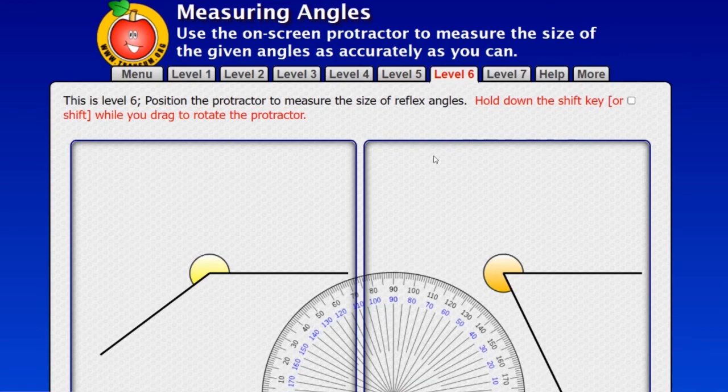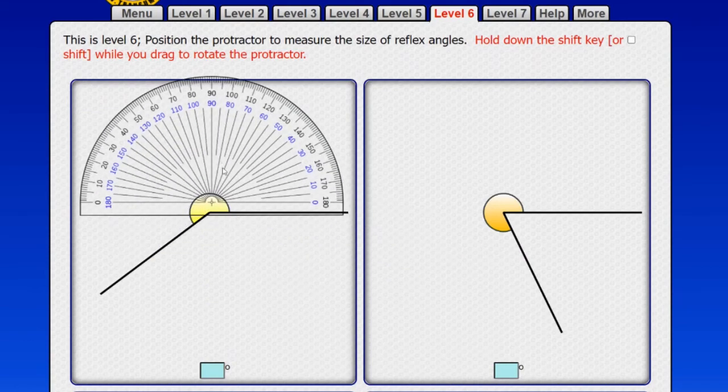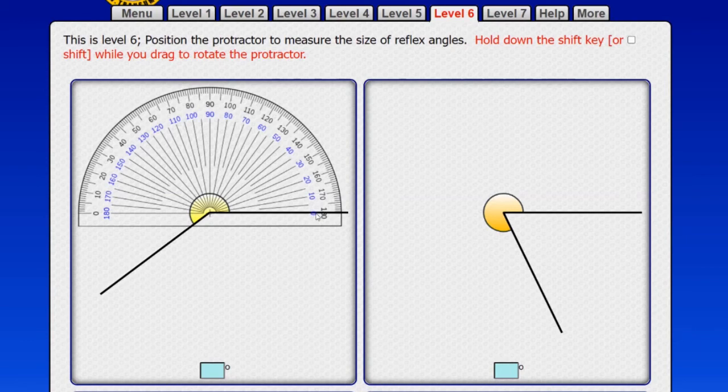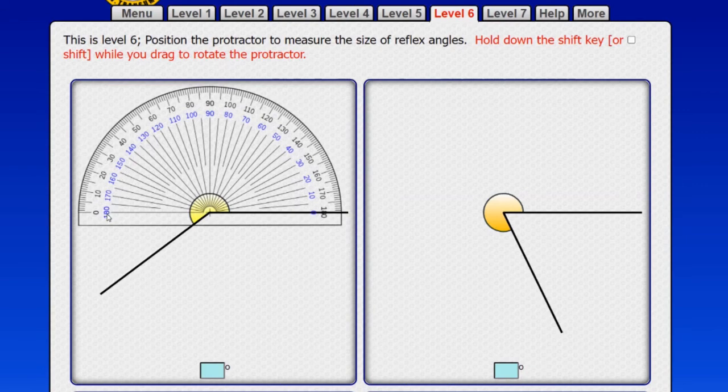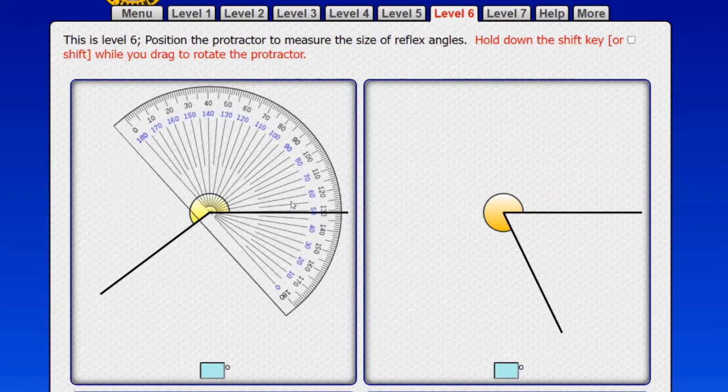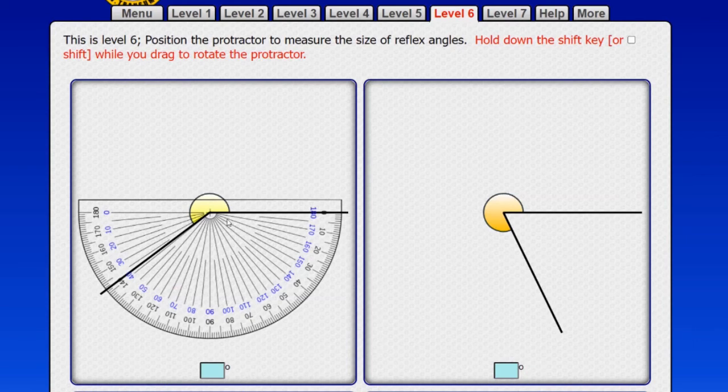Okay, now let's move on to level six. Now here we have some reflex angles. These are angles that are bigger than 180 degrees. So as you can see, this one goes all the way around there. And if I put my protractor over here and look where the zero meets the arm of the angle, the blue scale, I can count round on my blue scale. But by the time I've got to 180, I still haven't reached the other arm of the angle. So how am I going to measure this? Well, my favorite method is to rotate the protractor and measure the other part that isn't the angle.